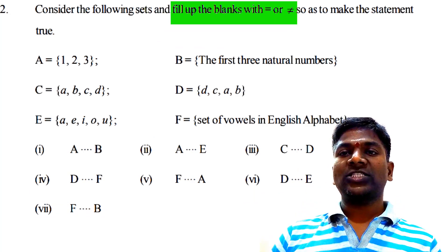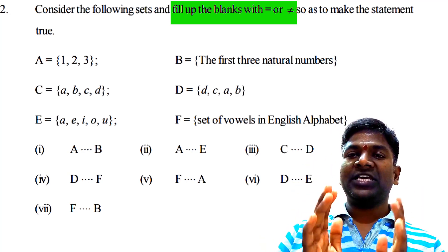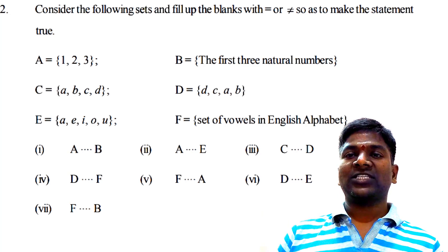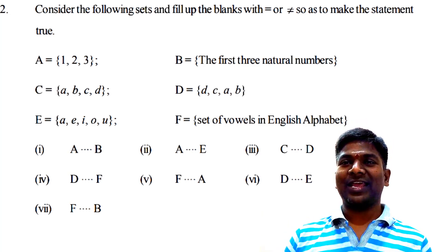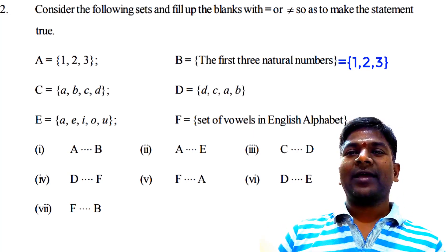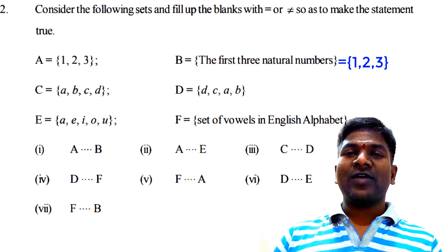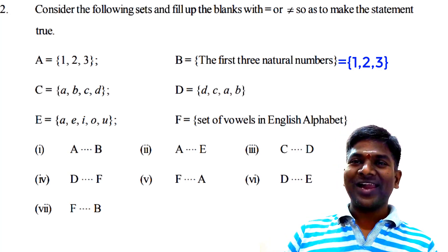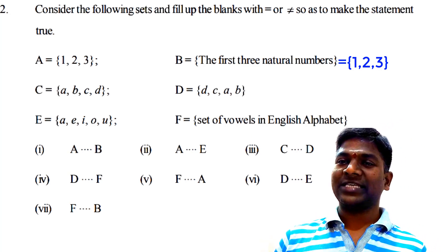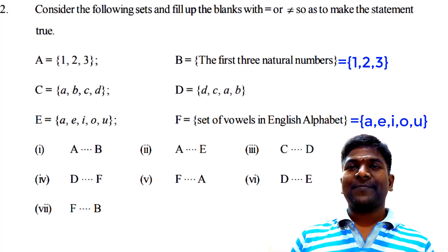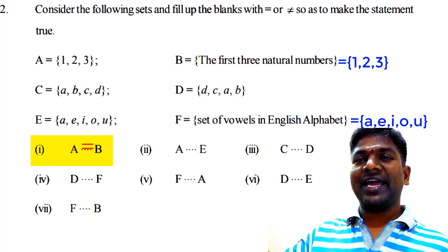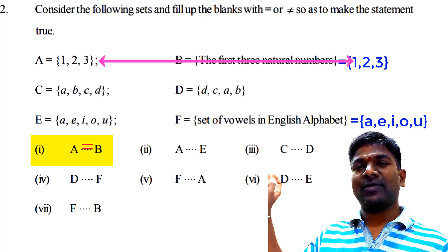First, sets A, C, and E are already clearly in roster form. Now we need set B in roster form. What is set B? The first three natural numbers. Natural numbers are 1, 2, 3, 4, 5, 6... What are the first three of them? 1, 2, 3. So the elements of set B are 1, 2, 3. For set F — set of vowels in the English alphabet — the vowels are A, E, I, O, U. So set F consists of elements A, E, I, O, U. Now, A _ B: set A consists of 1, 2, 3 and set B consists of 1, 2, 3. So write equal.